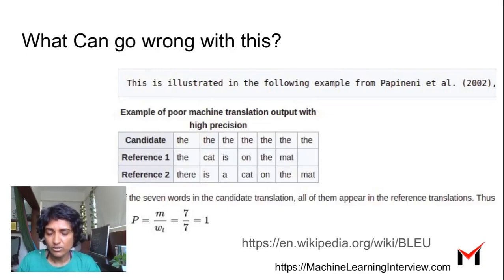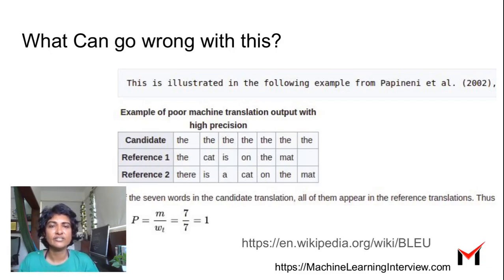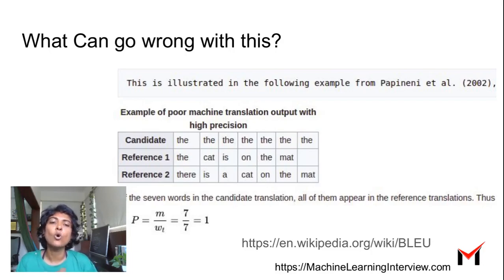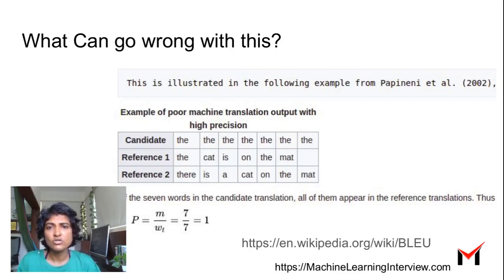So what can go wrong with this? Suppose you have a sentence like 'the, the, the, the, the, the, the, the' — that is what your model generated. Clearly this is not a meaningful sentence, but if you look at the proportion of words in the candidate that are in the reference, you will get a perfect score because 'the' is in the reference and that's the only word in the candidate. So all seven words in the candidate are in the reference. We don't want this, so how do we fix it?